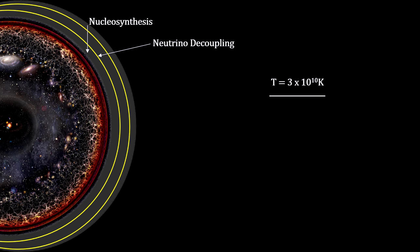When the universe was just one-tenth of a second old, its temperature was around 30 billion degrees. That's about twice the temperature of the interior of our sun.